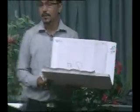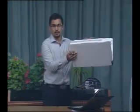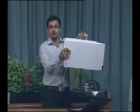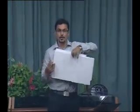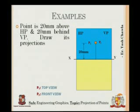Now, what is going to happen is that both HP and VP will be above XY, so I fold this way. When folding, both points will coincide, because both are 20 mm above this line. So the result is a single point — the top view and front view both appear as one point above line XY.